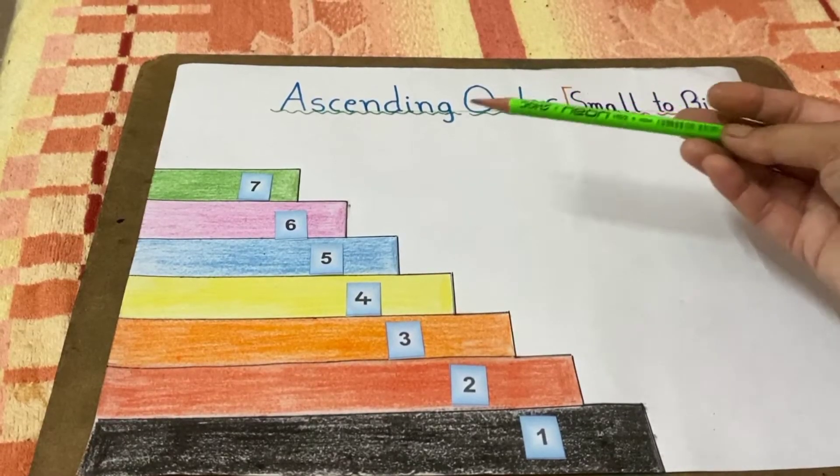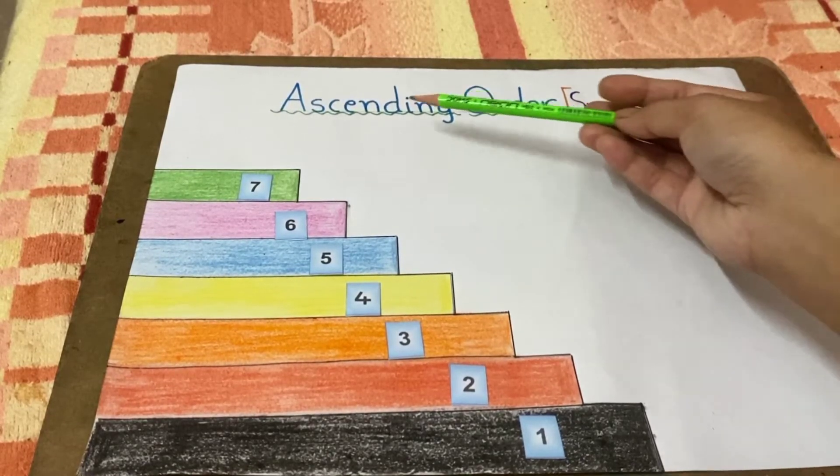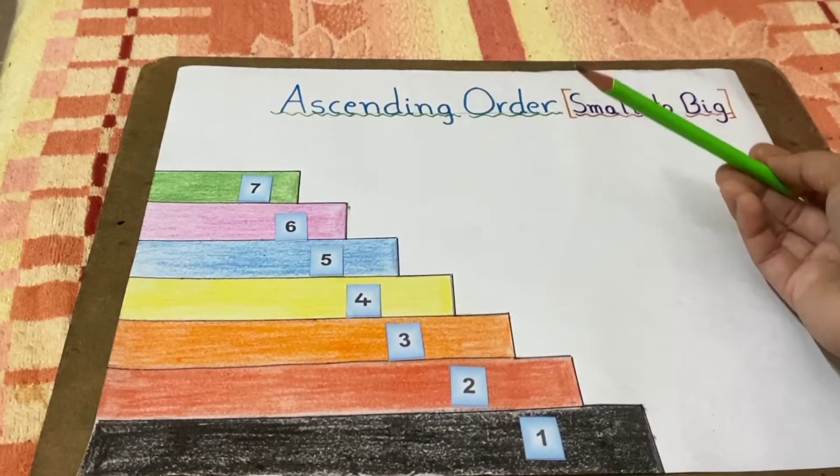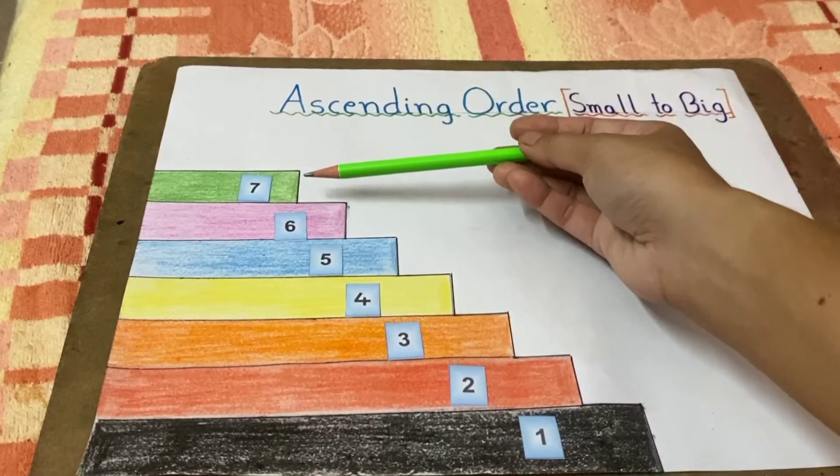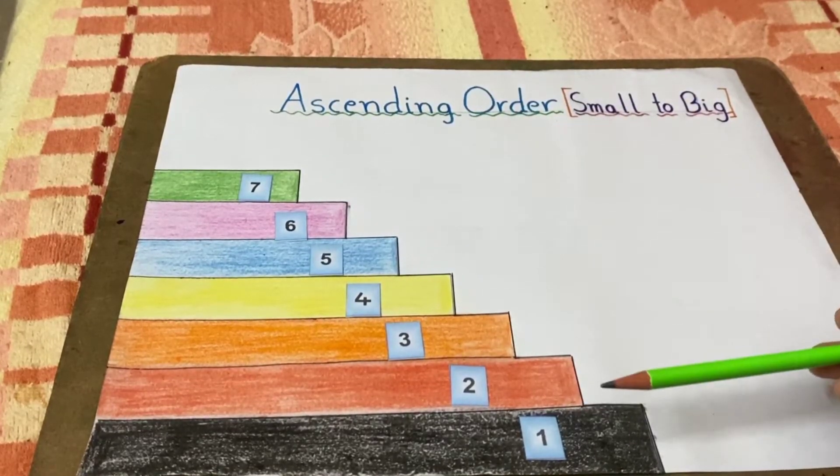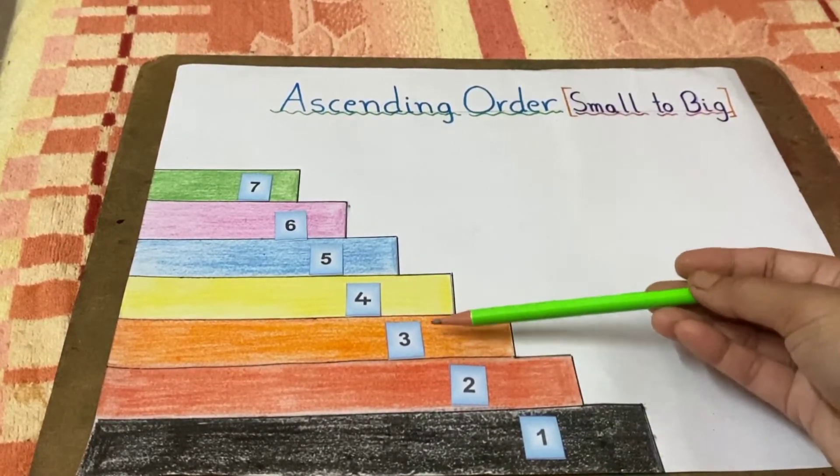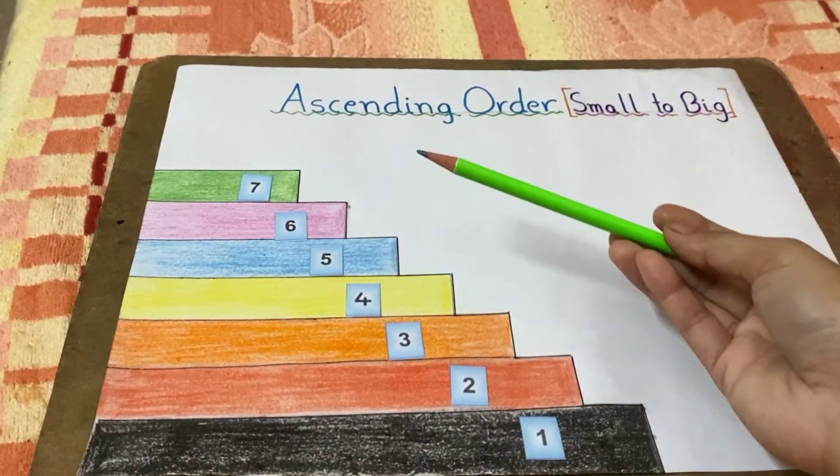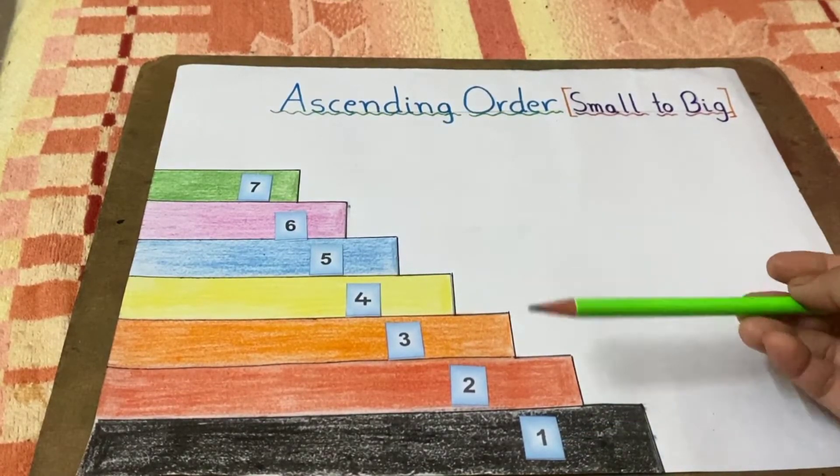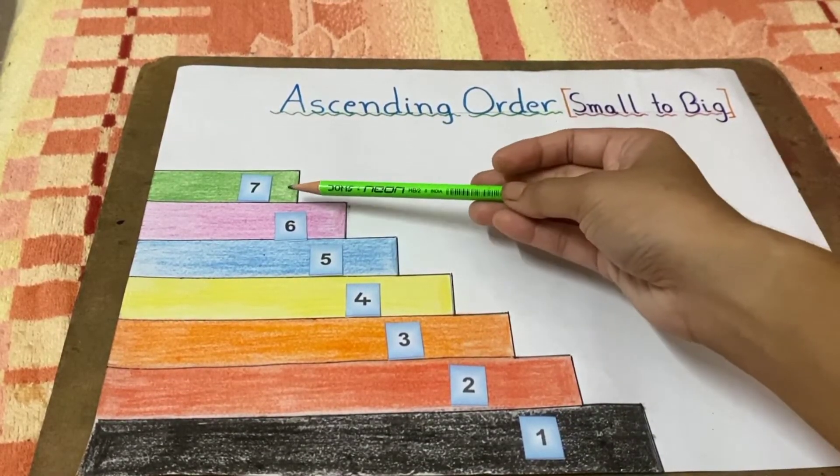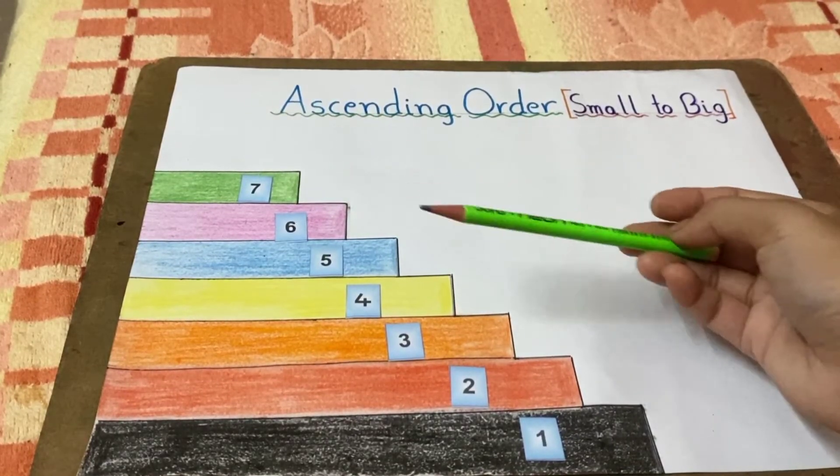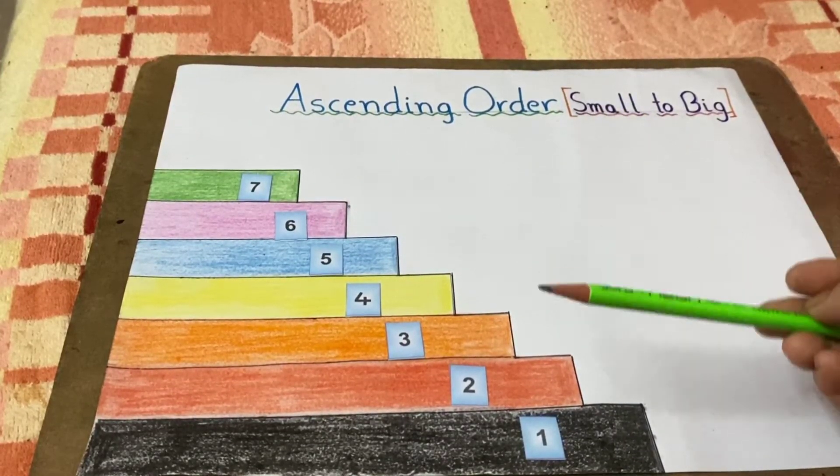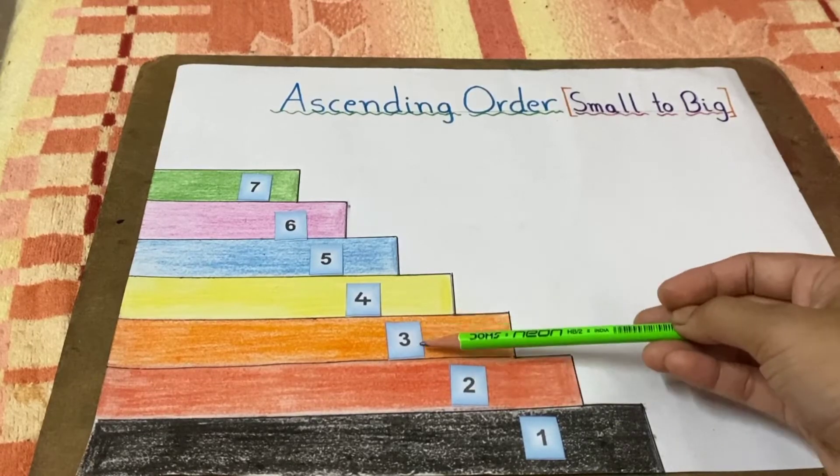Hello my dear children, today we will learn ascending order. Can you see these stairs? Each stair has a number from 1 to 7 in ascending order. Each number gets bigger or greater than the previous number as it moves from down to up.